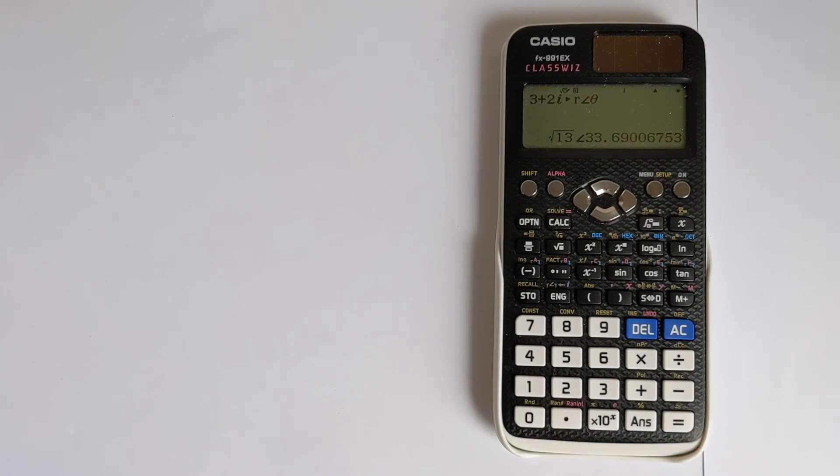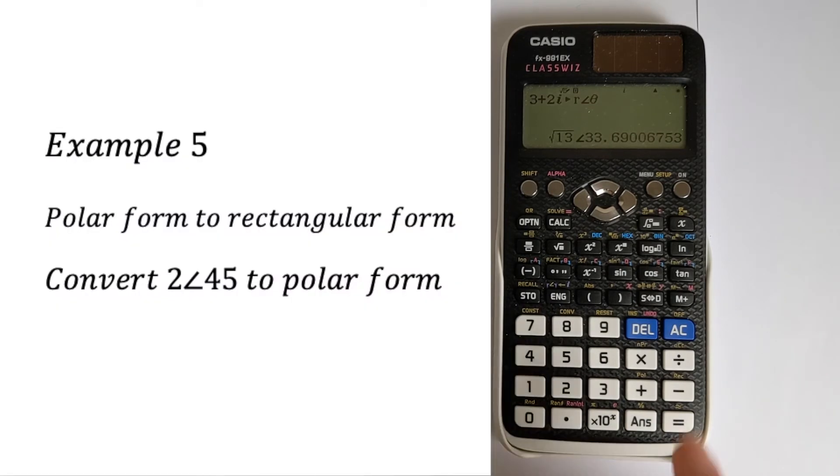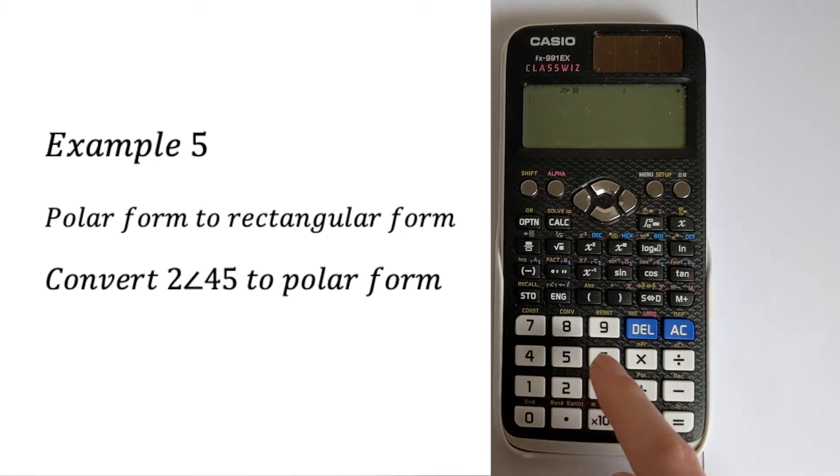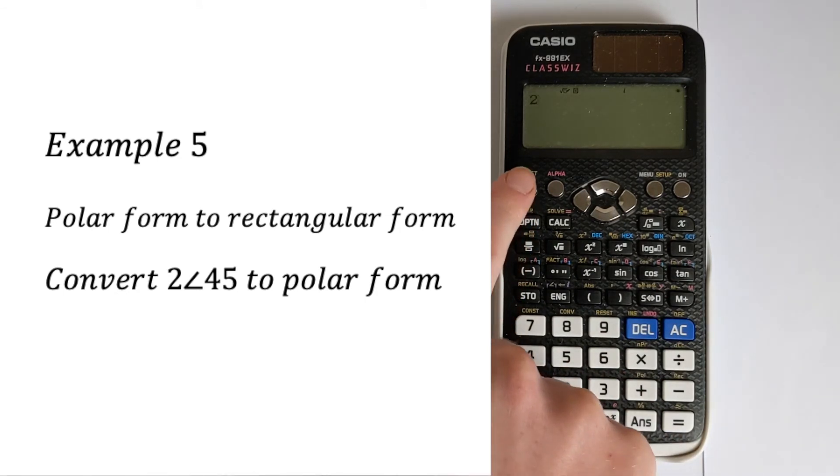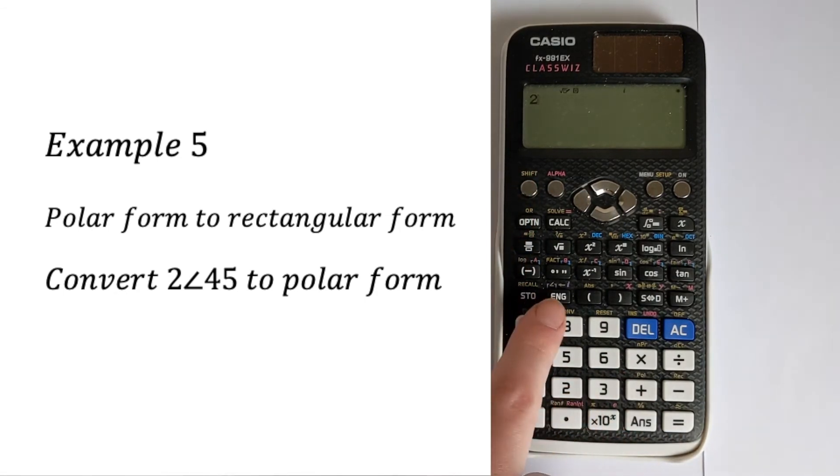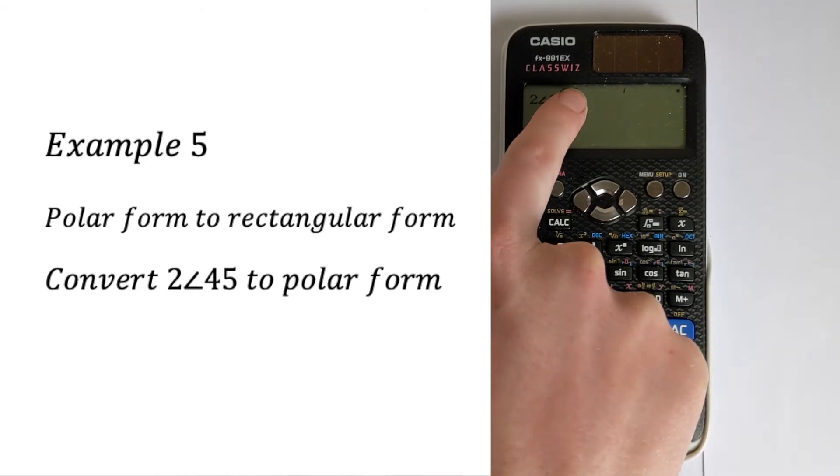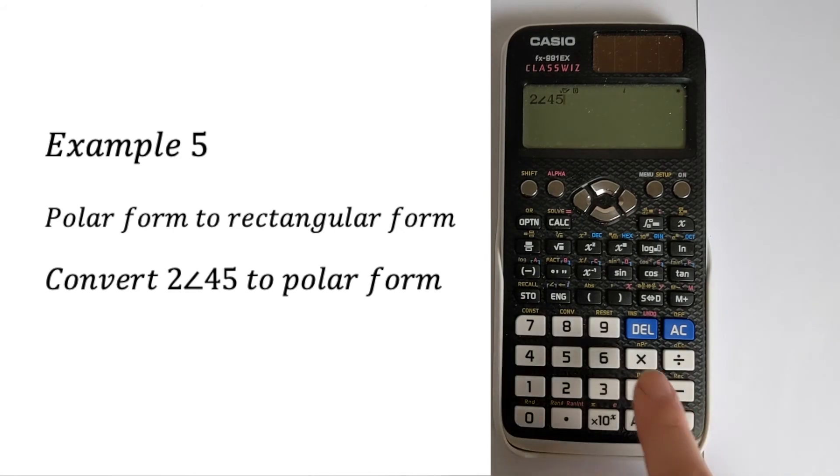You can also do it the other way around. You can enter a number in polar form and then convert it to rectangular form. Say, for example, we did 2. Then we want an angle. The angle is on the edge button. Press shift to an angle of 45 degrees.